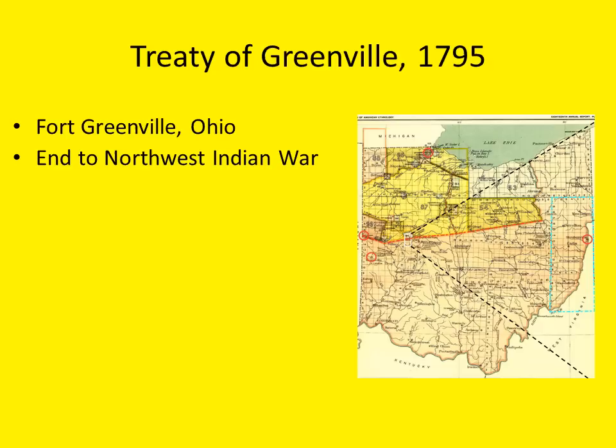The Treaty of Greenville brought an end to the Northwest Indian War. It was signed at Fort Greenville, Ohio, by the United States and a coalition of Native American tribes. After Fallen Timbers, this treaty put an end to the war, and the region would remain free of major conflict until the War of 1812. In the treaty, the US compensated Native Americans for goods lost in battles in exchange for land; however, roughly one third of present-day Ohio remained a Native American region.